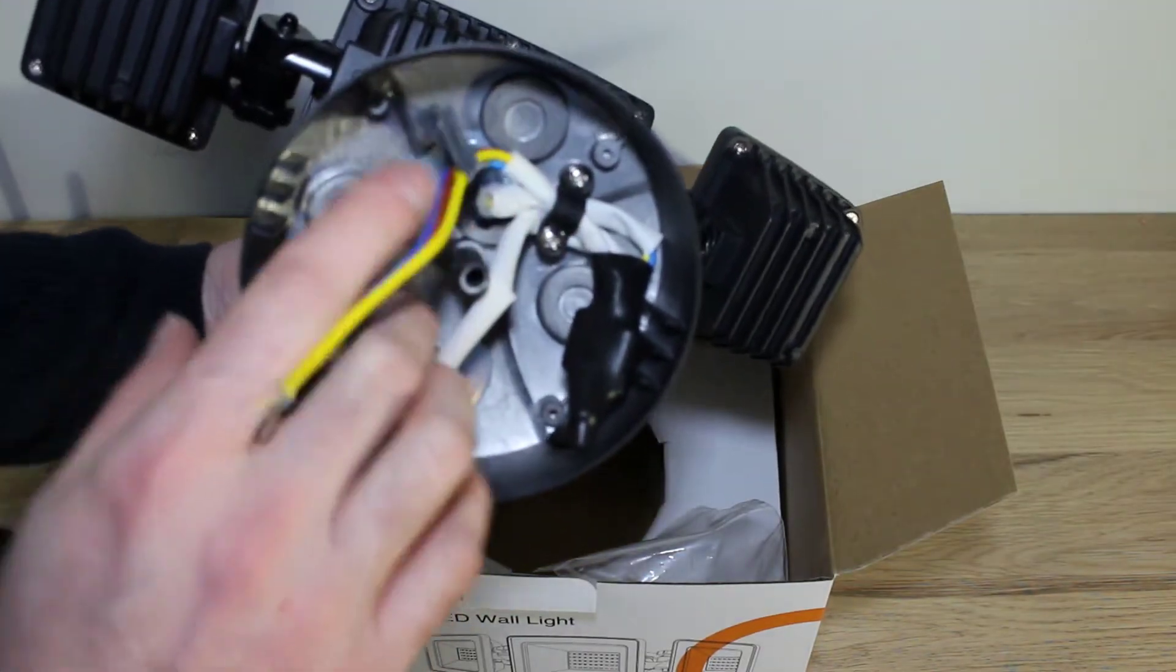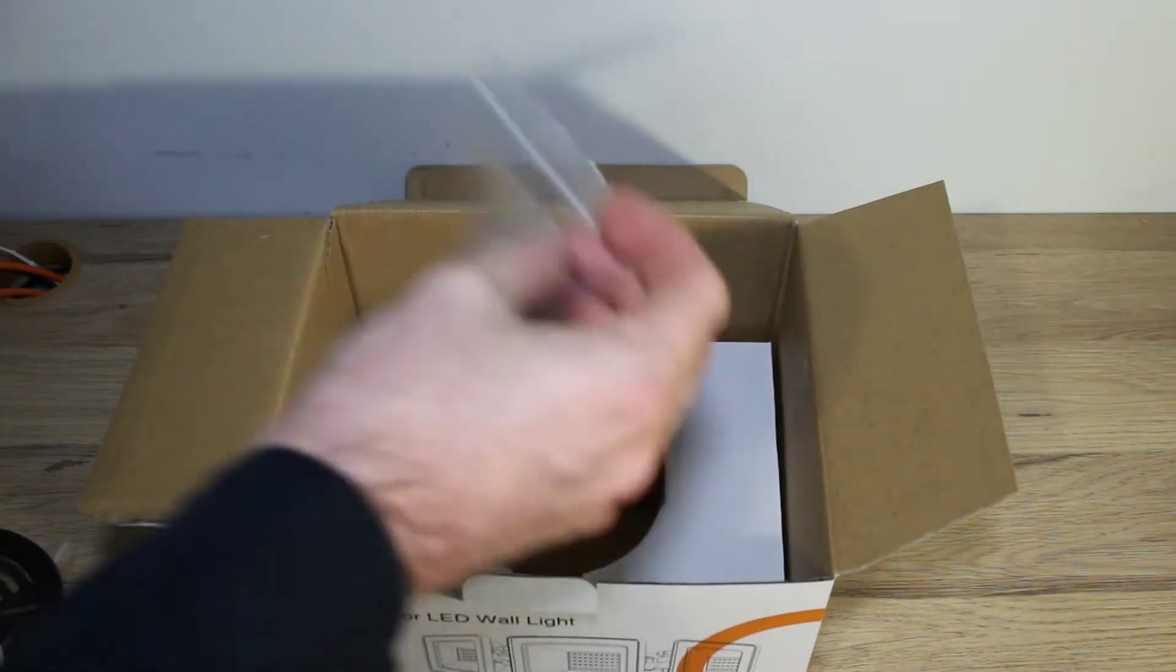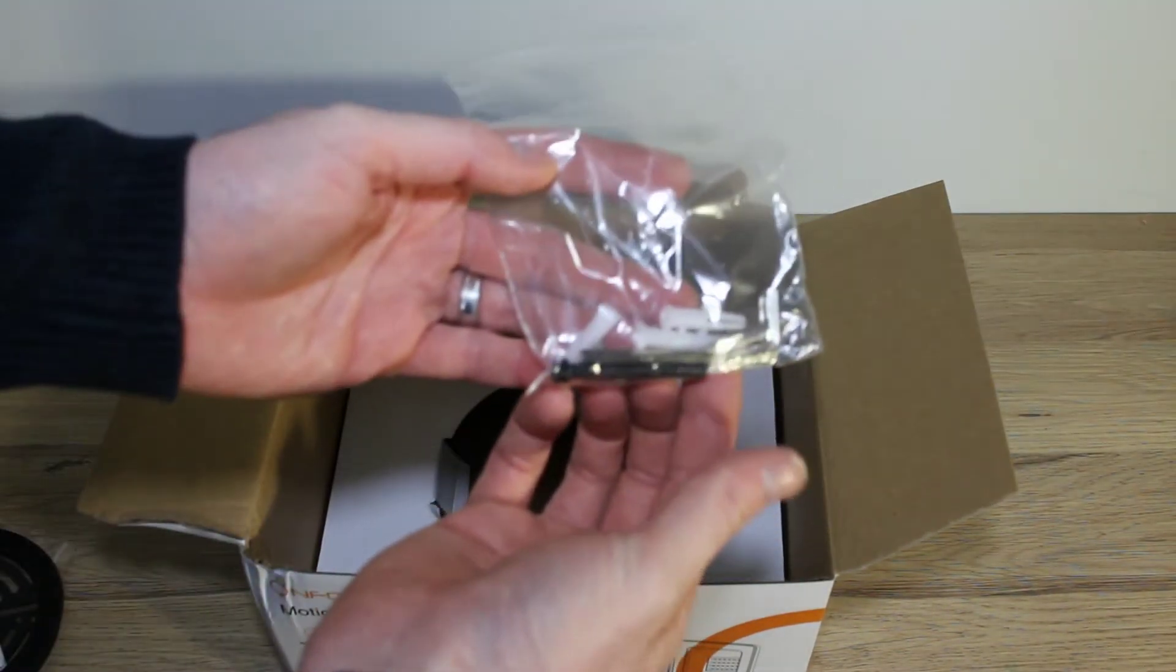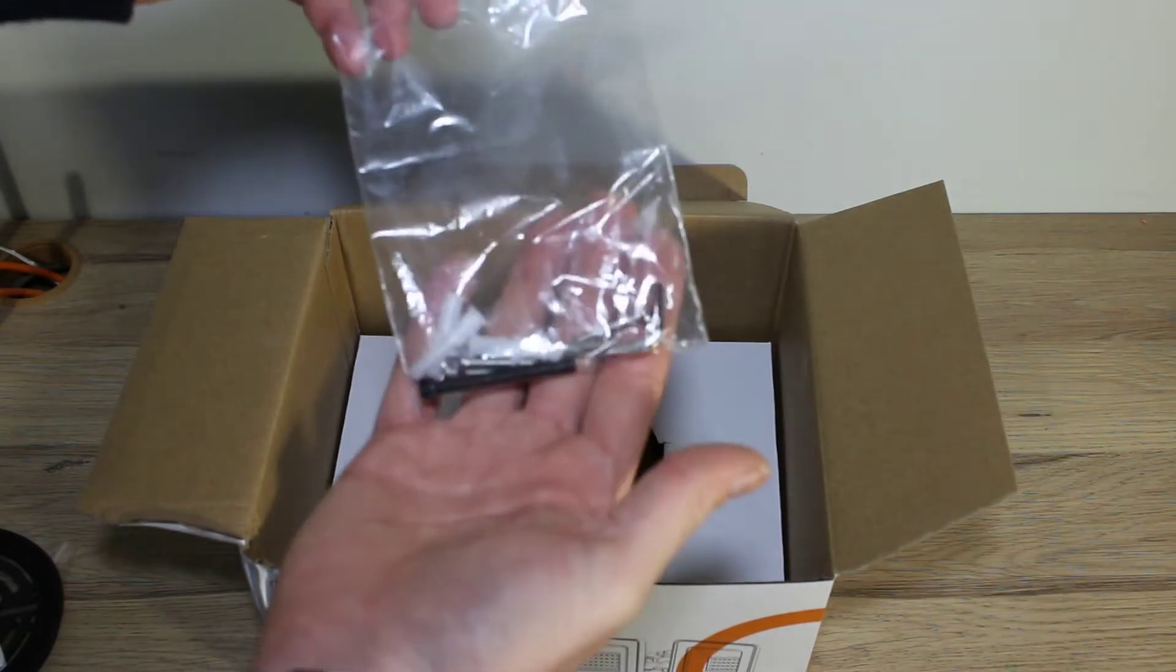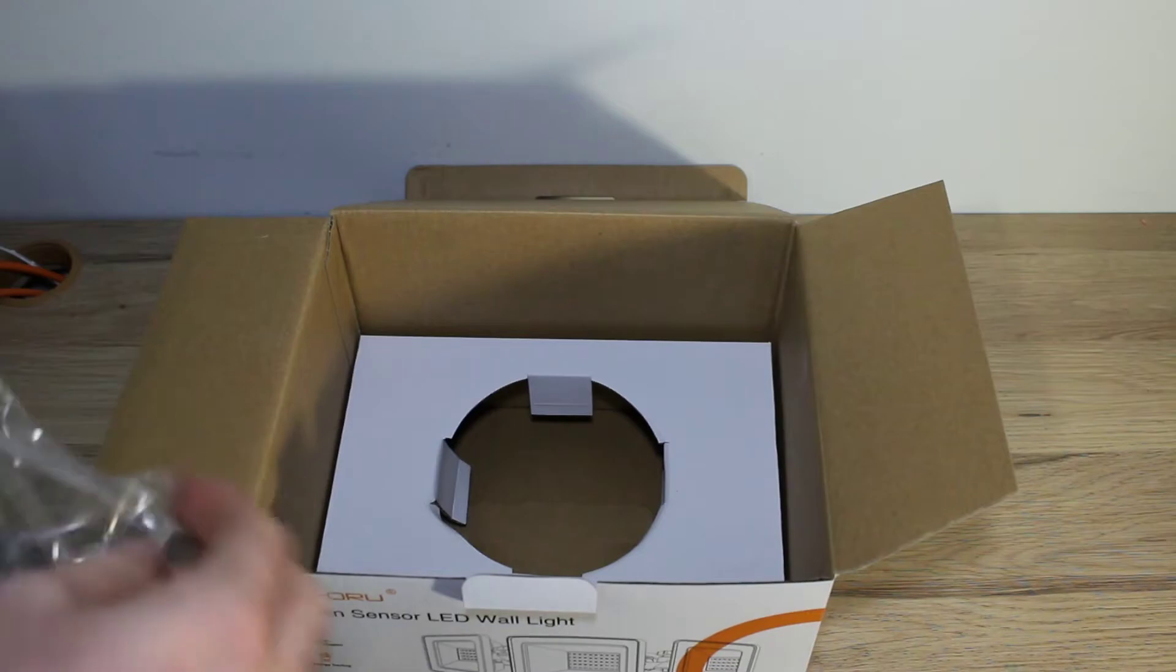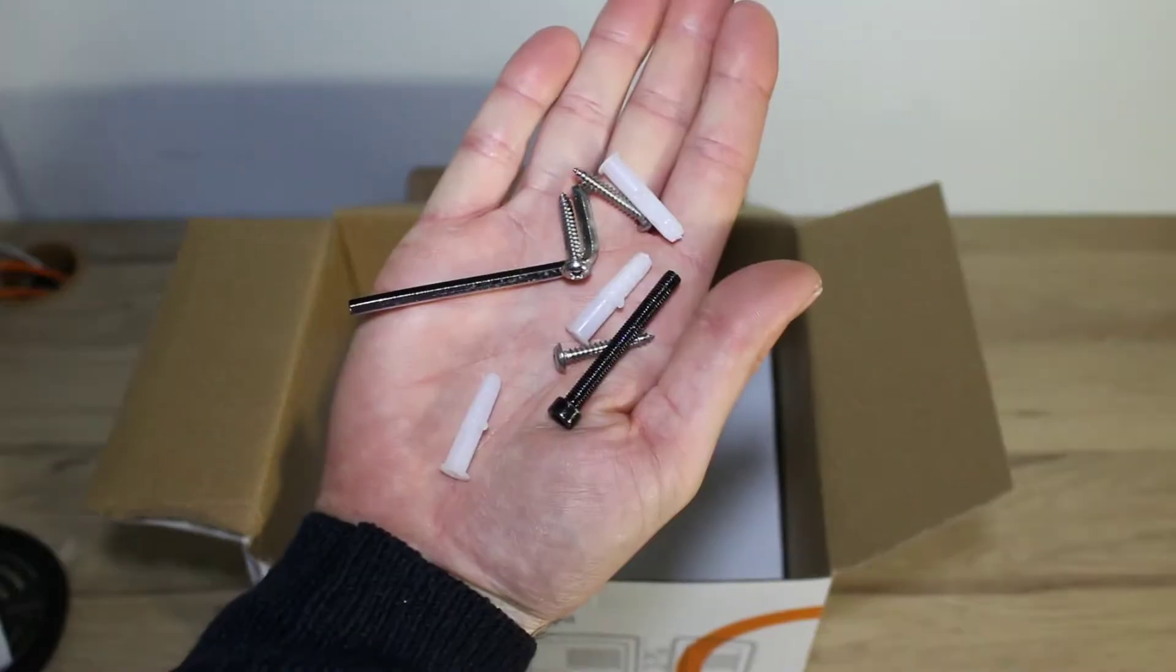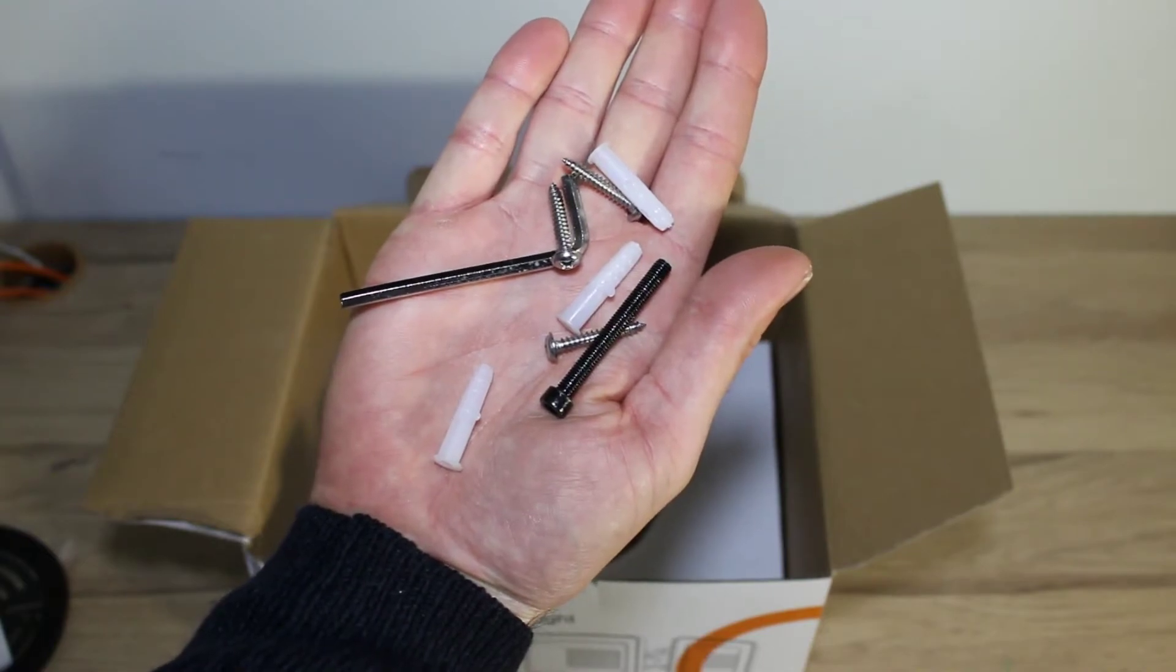Inside you've obviously got your standard three cables: live, neutral and earth. For fixings, it comes with three screws and you've got a large allen key that goes through the center of the fitting, and an allen key is provided.